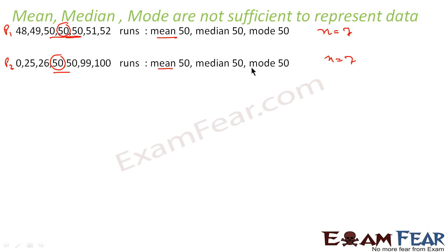Going by this data, management will say both are equally good, but that is not the case. We can see that this guy is consistent - consistently he is making runs. This guy is out for a duck, makes 25, 26, and sometimes he makes a century.